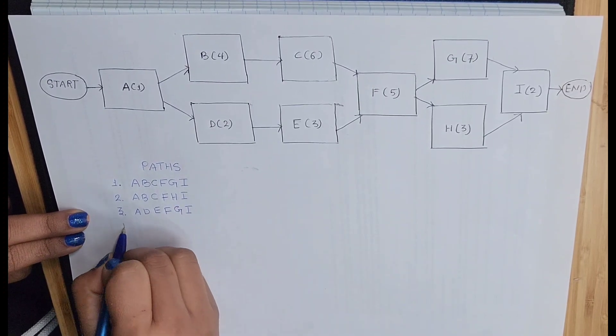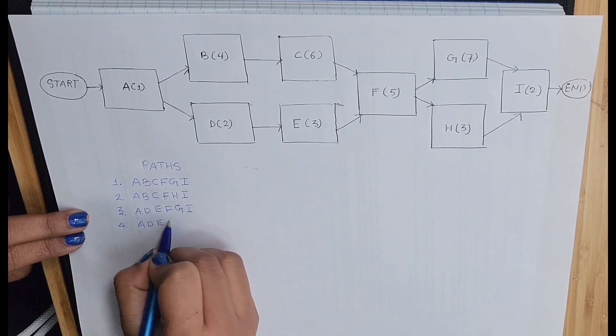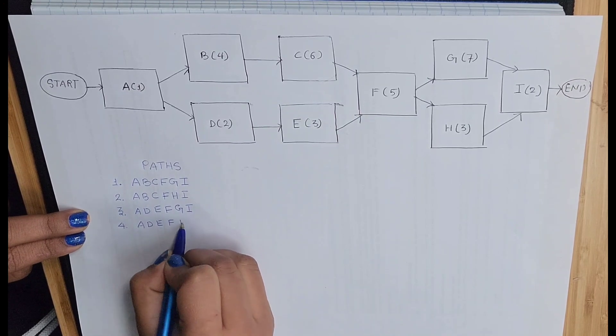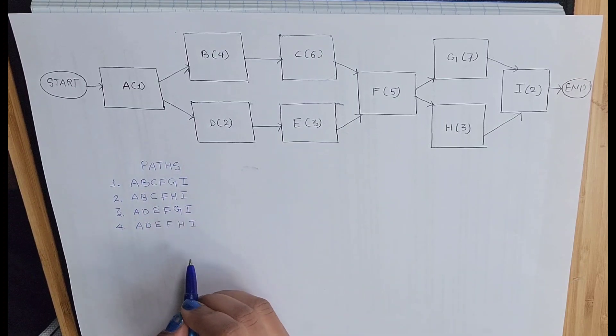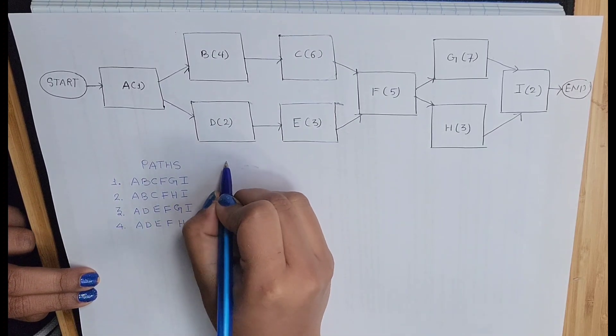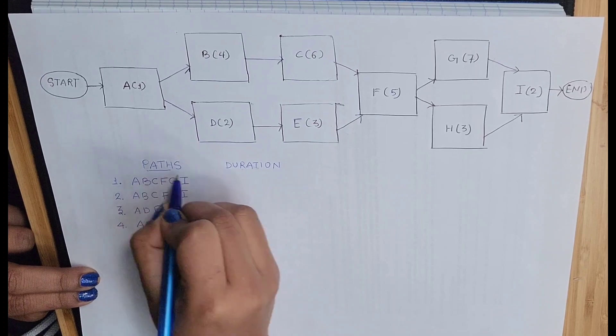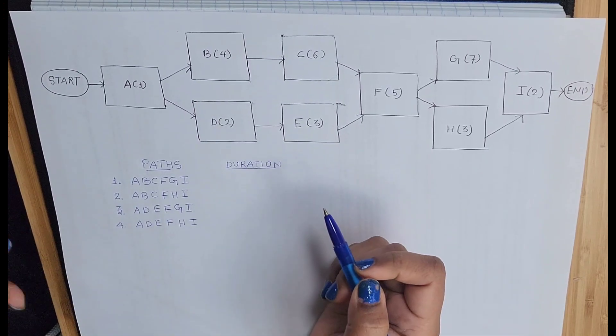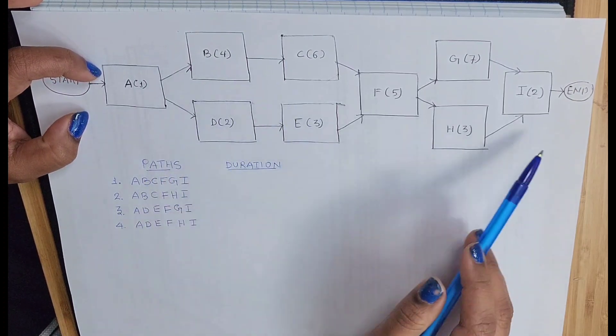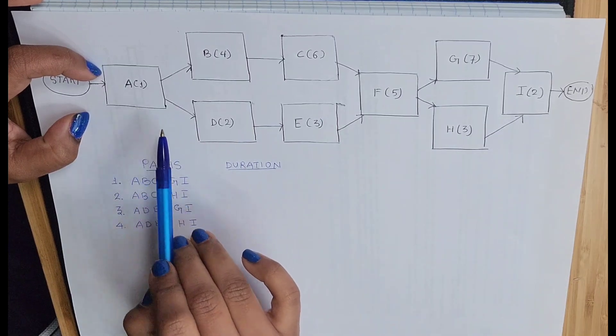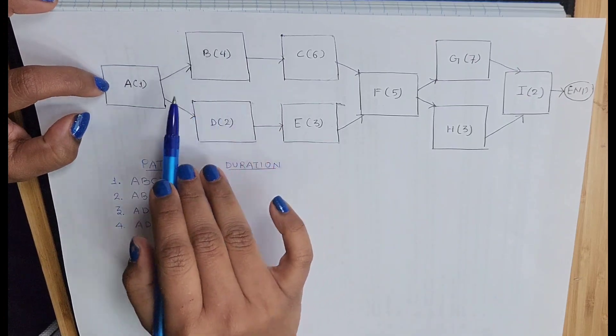Similarly, one more path is possible which is A-D-E-F-H-I. So first you have to write down all the paths. Now we have to calculate the duration of each path. To calculate the duration, you know how many days or hours these activities are going to take to complete. It is mentioned here.